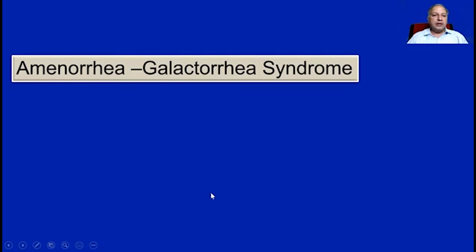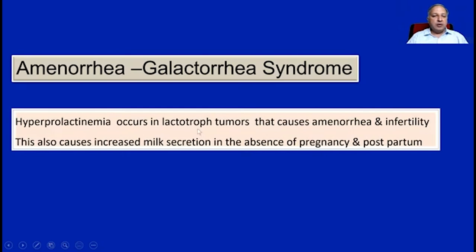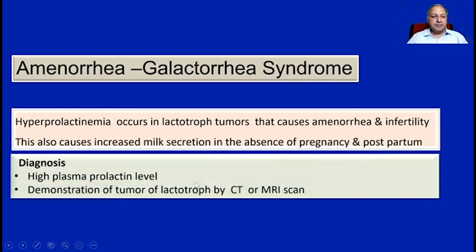Coming to an important applied aspect: the amenorrhea-galactorrhea syndrome. Lactotroph tumors cause enhanced production of prolactin, and this hyperprolactinemia causes complete inhibition of gonadotropin releasing hormone release, leading to amenorrhea and infertility. This can lead to increased milk secretion even in the absence of pregnancy and the postpartum period. Diagnosis is made by finding high plasma prolactin levels and demonstration of lactotroph tumor by CT or MRI scan.